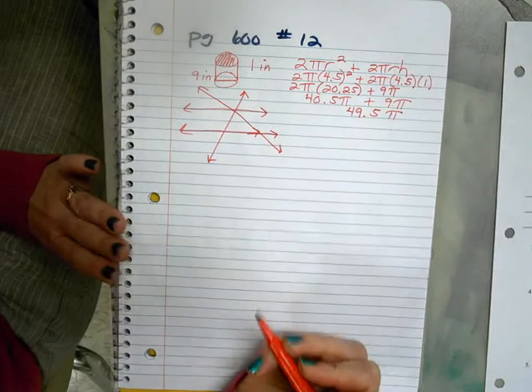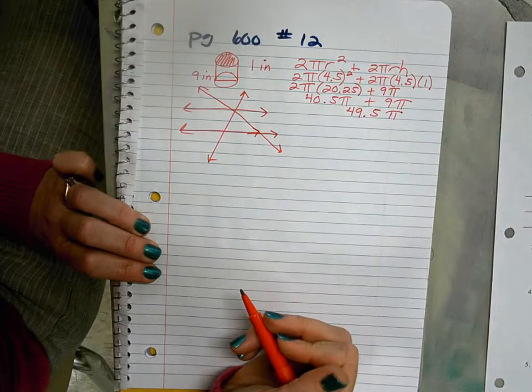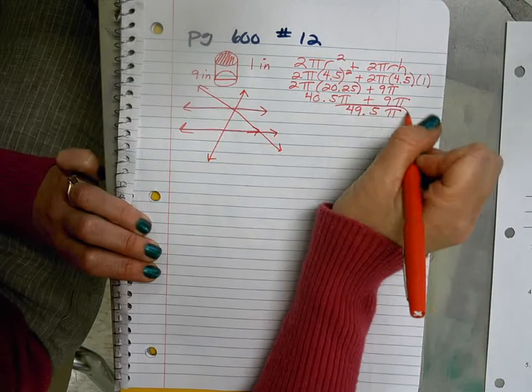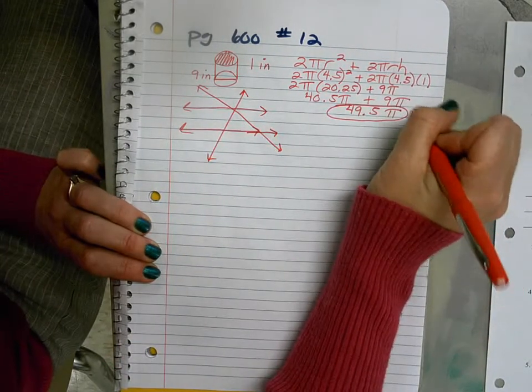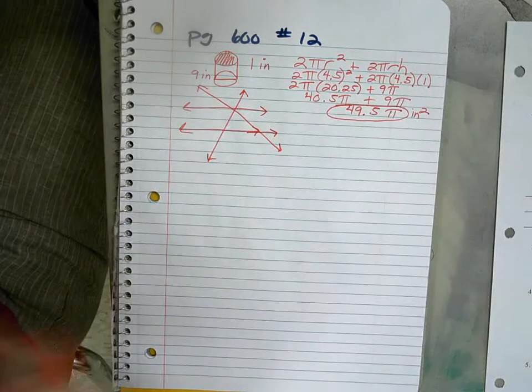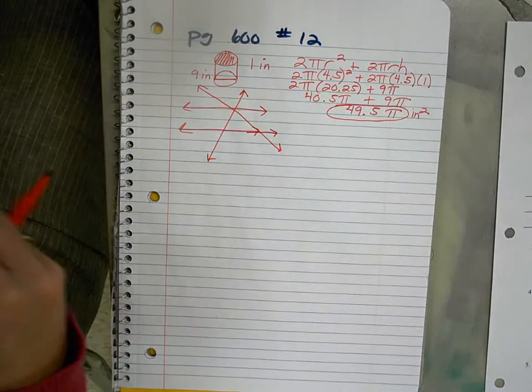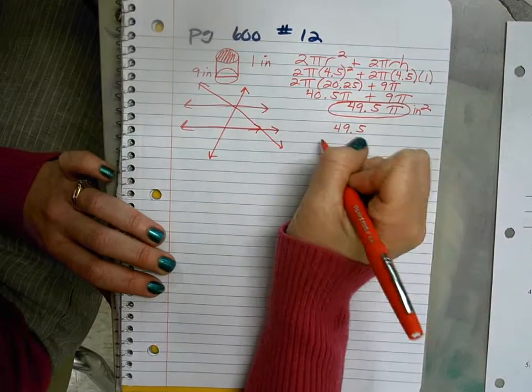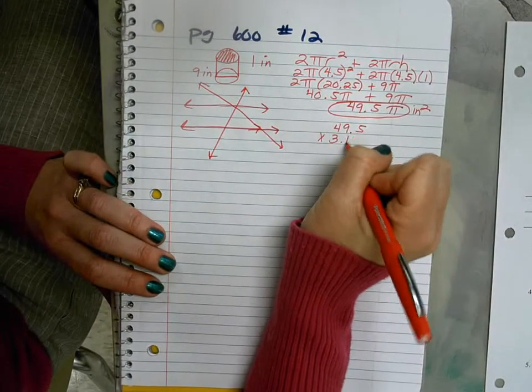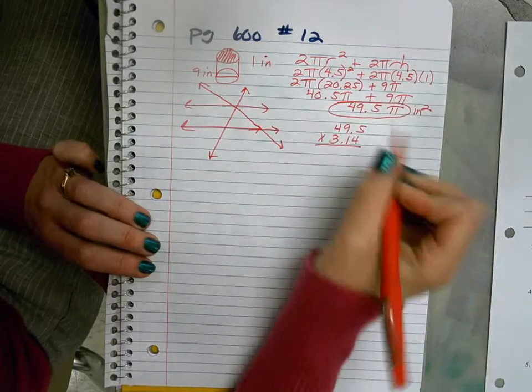So combining our like terms, we get 49.5π, which means we really only have to multiply by 49.5 one time. This is actually a great answer. It's very accurate, it's exact in inches squared. The issue is it's not as practical because what does 49.5π look like? So this is where I want you to finish up by using our estimate of π, 3.14, and do that multiplication.